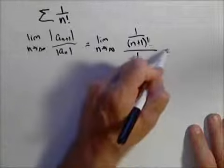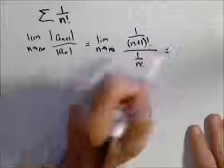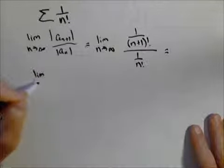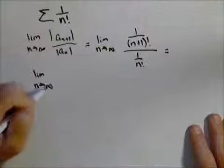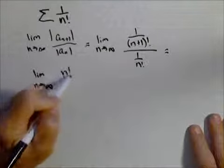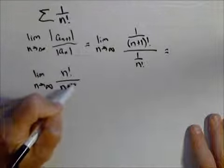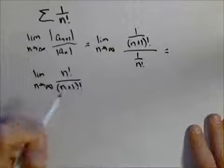So the first thing I'm going to do is flip and multiply. So what I'm looking for is the limit as n goes to infinity of n factorial over n plus one factorial.